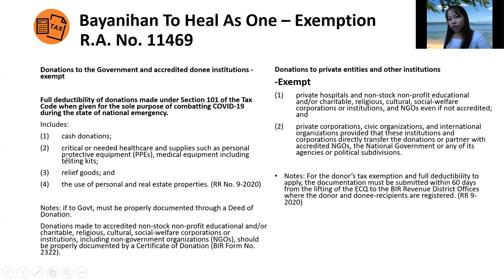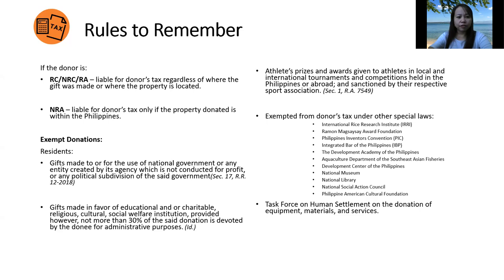We need to classify whether the donee is a resident or non-resident alien. For residents, there are two general exemptions under the law: first, gifts made to or for the use of the national government or any entity created by its agency which is not conducted for profit, or any political subdivision of said governments; and second, gifts made in favor of educational, charitable, religious, cultural, or social welfare institutions, provided that not more than 30 percent of the donation is devoted by the donor institution for administration purposes.